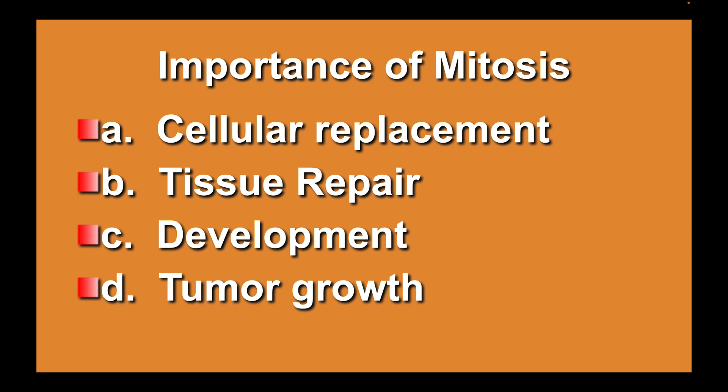The importance of mitosis includes: cellular replacement — cells wear out and need to be replaced; tissue repair — if you get a cut, skin cells need to be produced to heal the wound; and development — as an individual grows bigger, more cells are needed, and that happens through mitosis. Mitosis can also lead to tumor growth if uncontrolled. Uncontrolled cell division is what we generally refer to as cancer — the cells just become growing machines and take over the body.